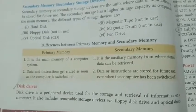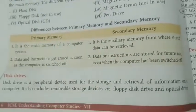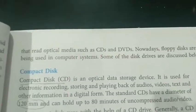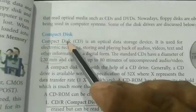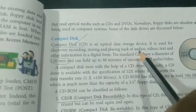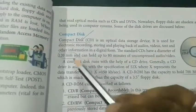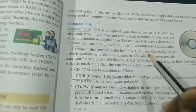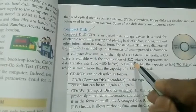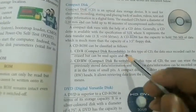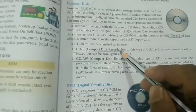Disk drives are peripheral devices used for storage and retrieval of information. They include floppy disk drives, optical drives, and optical media such as CDs and DVDs. The compact disk (CD) is quite popular for storing audio, video, and text. Its diameter is 120 mm, it can store audio/video up to 80 minutes, the speed is represented by '52x', and its capacity is 700 MB.